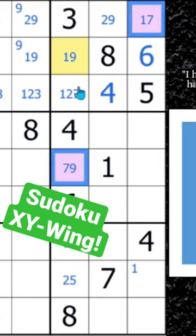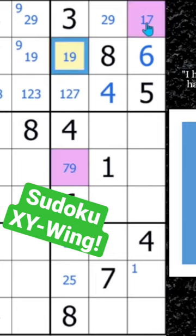So for an XY-wing to work, basically what you see is that you need three sets of candidates, bivalued cells. In this case, it's going to be a 1, 7, 1, 9, and 7, 9, the three variations of the 1, 7, 9.